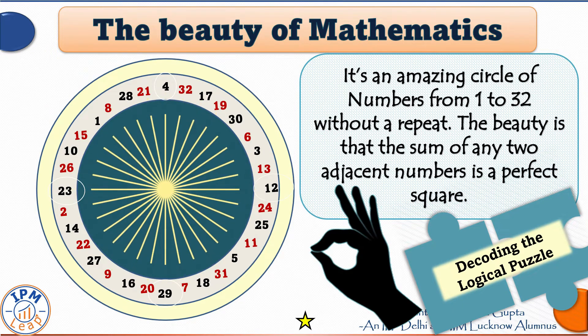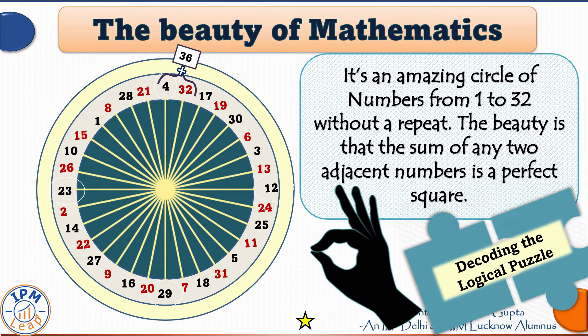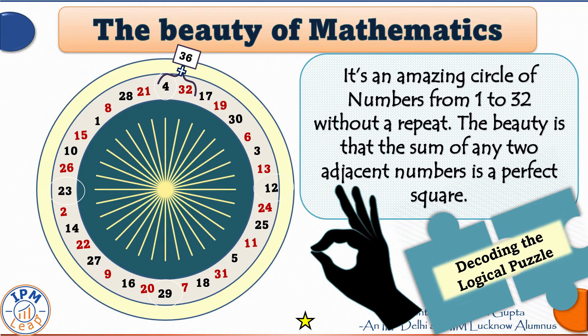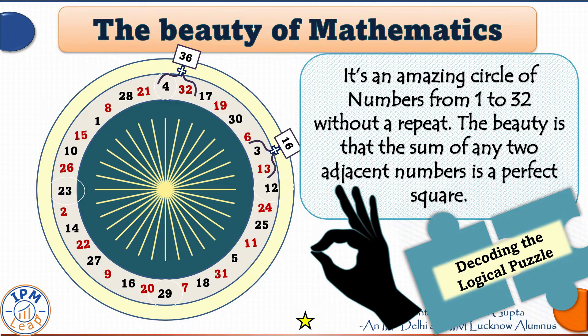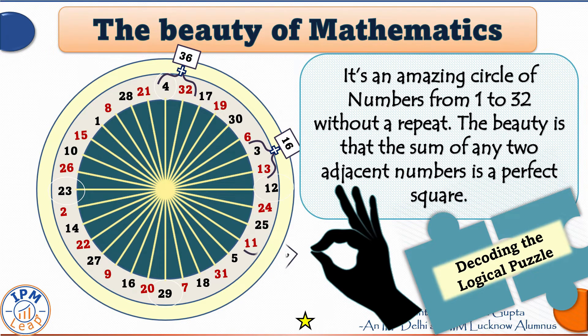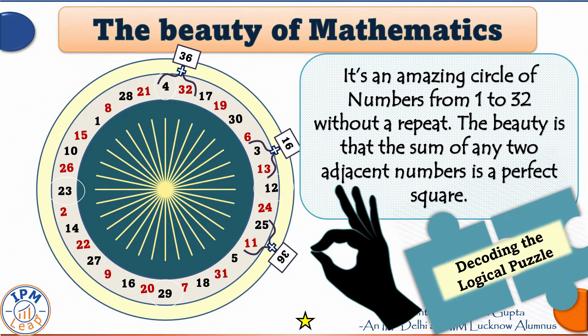For instance, if I add 4 and 32 I get 36 which is the square of the number 6. If I add the numbers 3 and 13, I get 16 which is 4 square. If I add 25 and 11, I again get 36 which is 6 square.